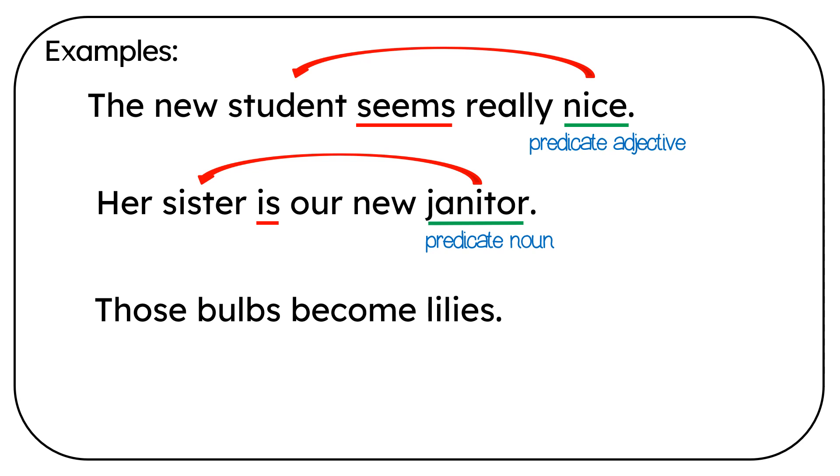Those bulbs become lilies. Become is the linking verb. Lilies is the predicate noun. It's referring back to bulbs.